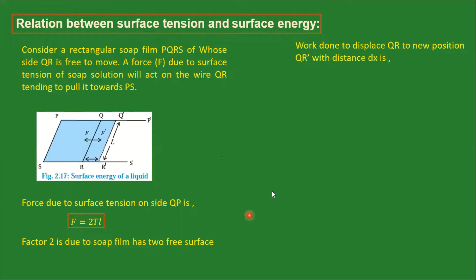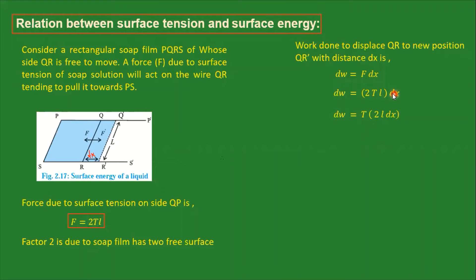Now we displace QR to a new position Q'R' with distance dx. The work done is given by force into displacement, so dW = 2Tl × dx. Taking T outside, we have dW = T × (2l × dx), where l is this side and dx is the displacement.